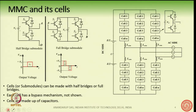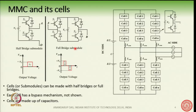Let us now see the converter structure, starting with the cell. The basic structure of MMC is made up of cells — there can be hundreds of cells working together. Inside one cell, there can be two varieties: one is the half-bridge sub-module and the other is the full-bridge sub-module. Cells are also called sub-modules; the terms are used interchangeably.